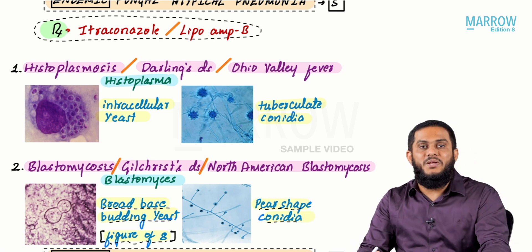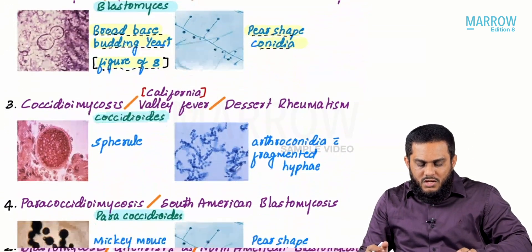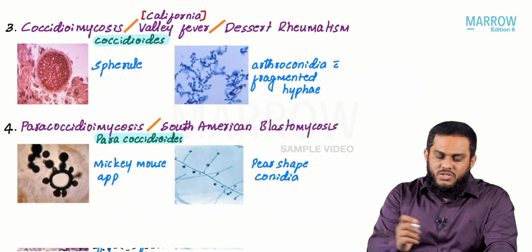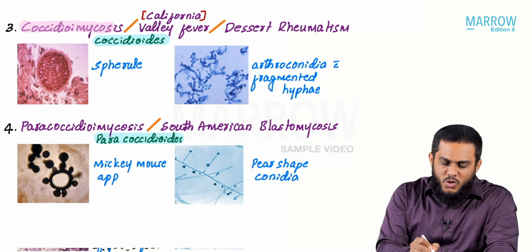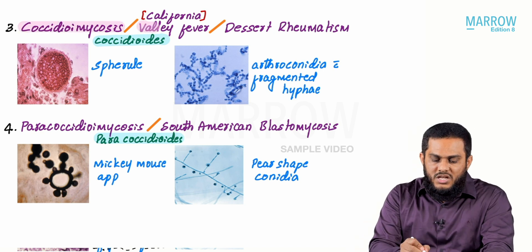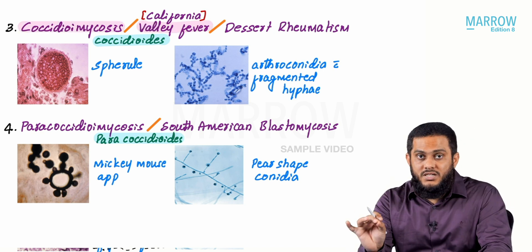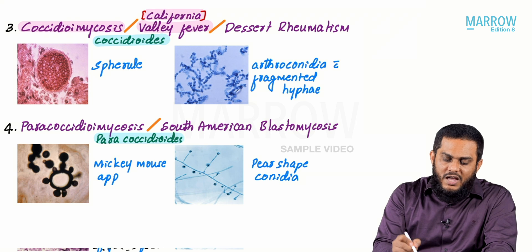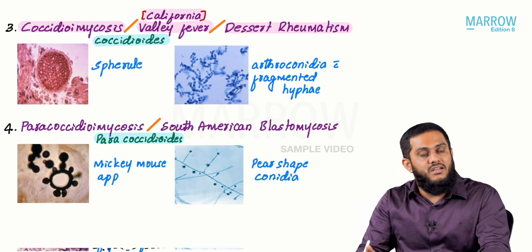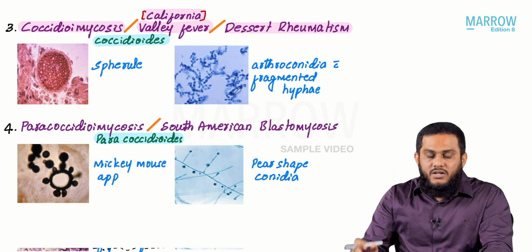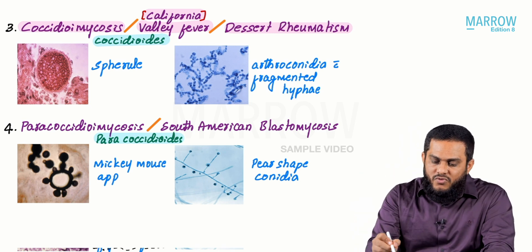Coccidioides causes pneumonia known as coccidioidomycosis, also called Valley fever or California Valley fever because it is found along the valleys of California. It is also known as desert rheumatism because it is found most commonly in desert areas.